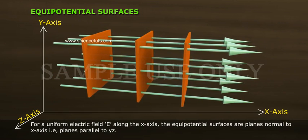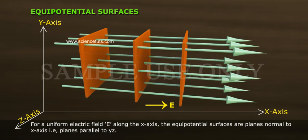For a uniform electric field E along the x-axis, the equipotential surfaces are planes normal to x-axis, that is planes parallel to yz plane.